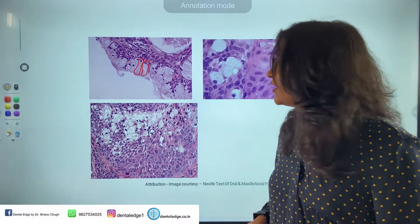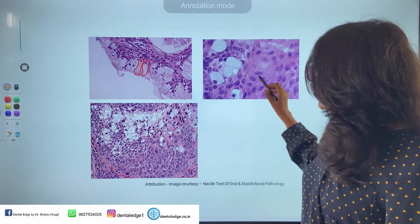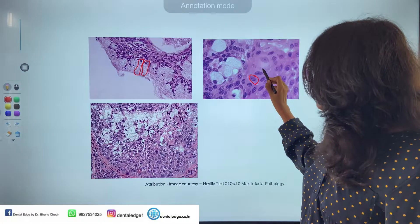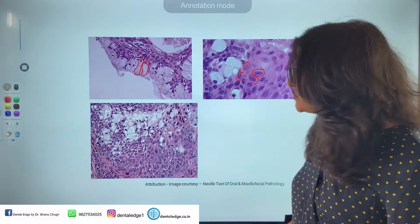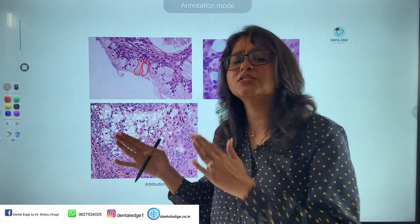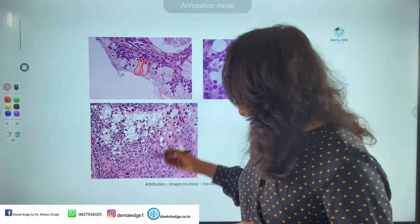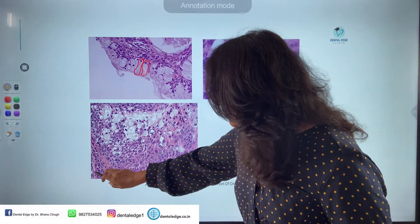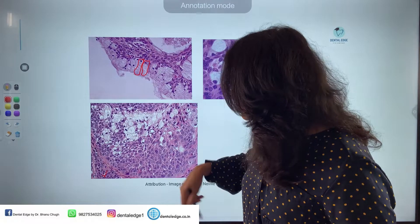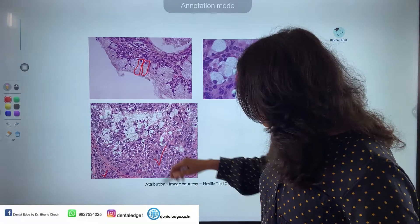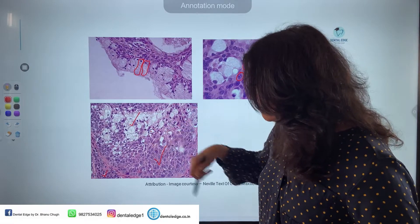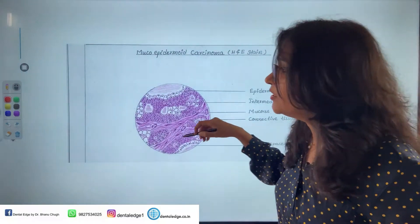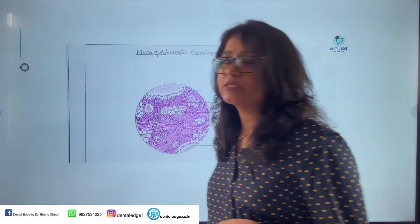Looking at this histological image: the large cells are the mucus cells; the flat polygonal shaped cells are the epidermoid or squamous cells; and the population slightly larger than basal cells but smaller than squamous cells are the intermediate cells. The foamy cytoplasmic varying cells are the mucus cells.